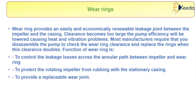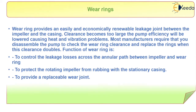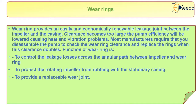Wear rings provide an easily and economically renewable leakage joint between the impeller and the casing. If the clearance becomes too large, the pump efficiency will be lowered, causing heat and vibration problems. Manufacturers require disassembling the pump to check wear ring clearance and replace the wear rings when clearance doubles. The functions of the wear ring are to control leakage losses across the annular gap between the impeller and the casing, to protect the rotating impeller from rubbing with the stationary casing, and to provide a replaceable wear joint.